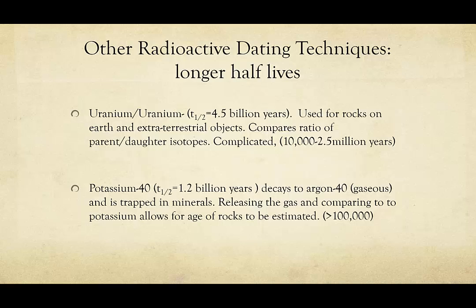This isn't the only kind of radioactive dating — there are other kinds. For instance, we can use uranium-uranium dating, which looks at the isotopes of uranium and their daughter isotopes. This is really complicated and we won't do it in this class, but know that it is possible. This is how we can get dates for things like rocks, which have been around far longer than 60,000 years, or extraterrestrial objects. Another method is potassium-40 dating, with a half-life of about 1.2 billion years. It decays down to argon, which gets trapped in minerals. By comparing the gases released, we're able to tell how old rocks are — this method works for things older than 100,000 years. We can do this for things that were never living, and it's one of the ways we look at geological timescales.